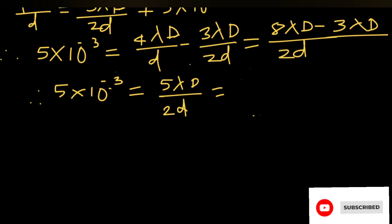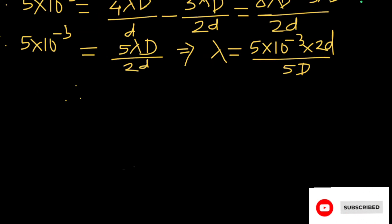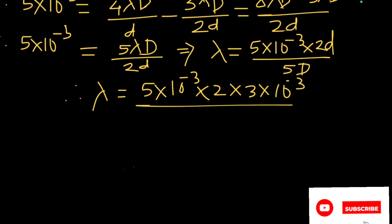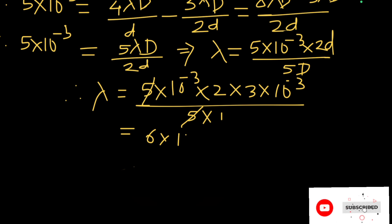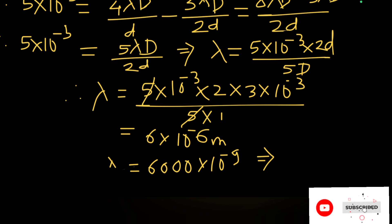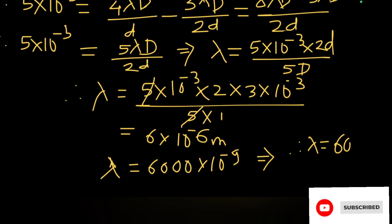Substituting the values: λ = (5 × 10⁻³ × 2 × 3 × 10⁻³) / (5 × 1). The 5s cancel, giving λ = 6 × 10⁻⁶ m, which is 6000 nanometres. That is the final answer.